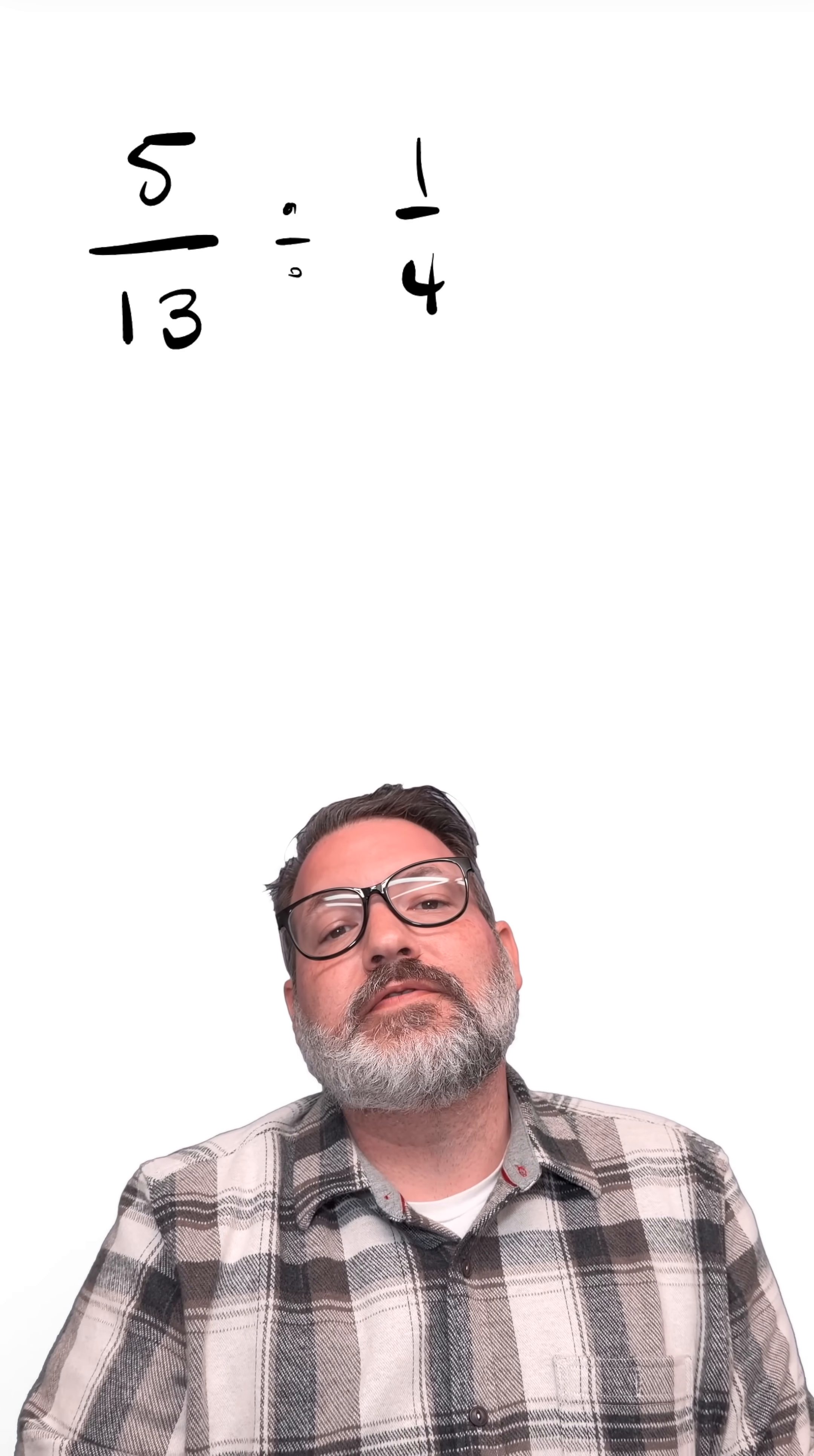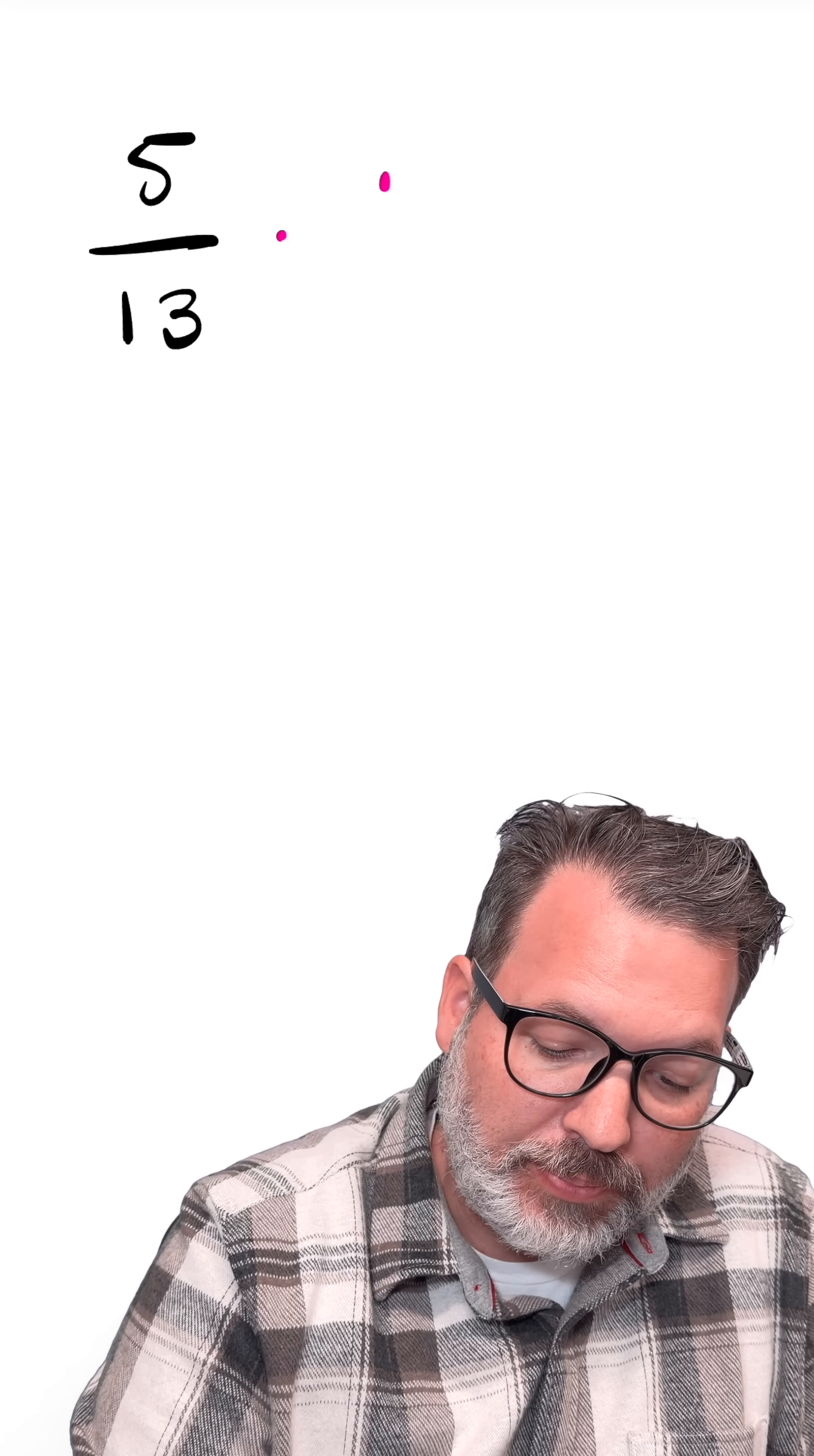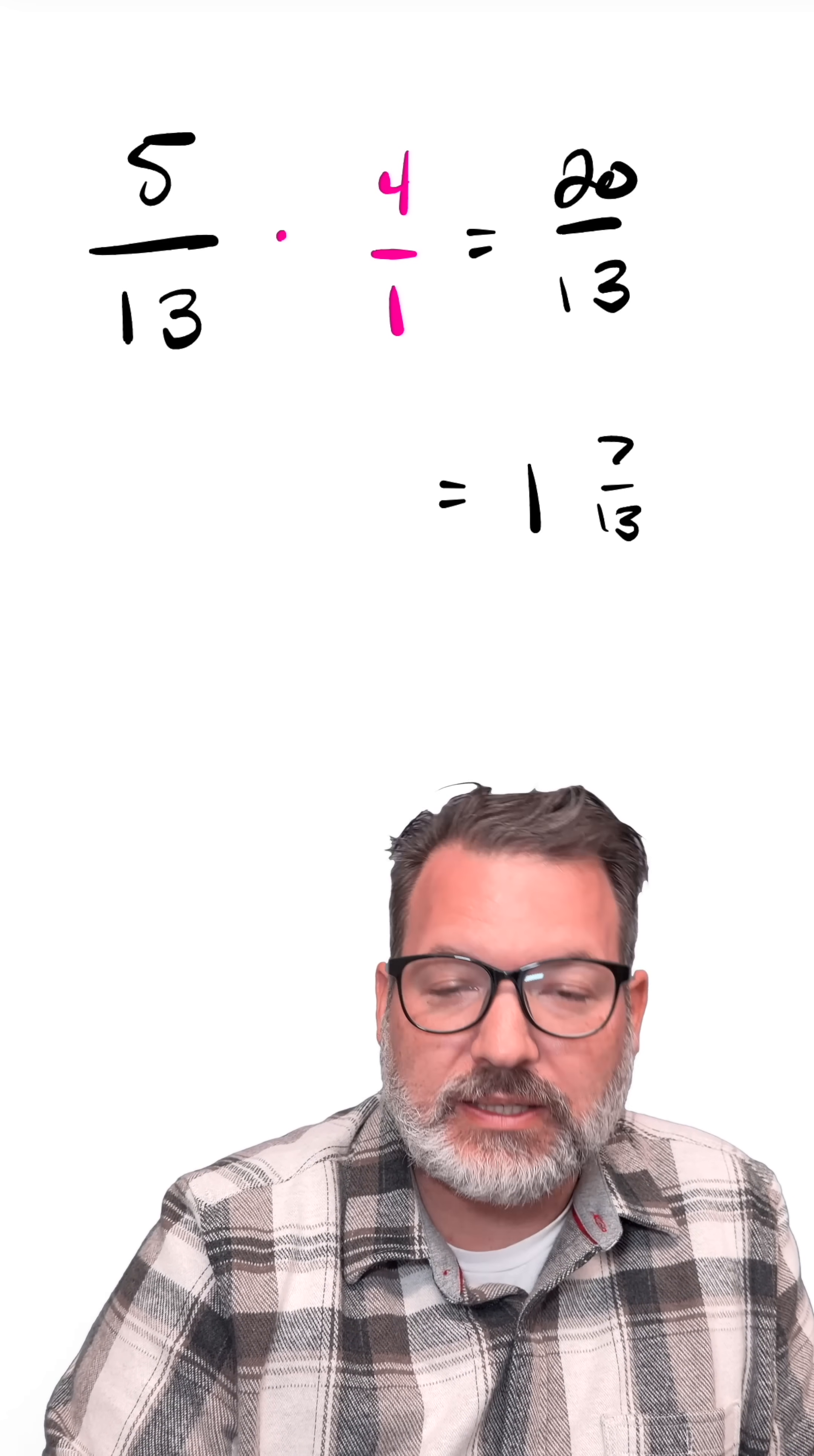This is where it's key to remember that division is the same thing as multiplication by a reciprocal. So dividing by one fourth is actually the same thing as multiplying by four over one. And what this gives us back is the answer 20 thirteenths, or if you prefer mixed numbers, one and seven thirteenths.